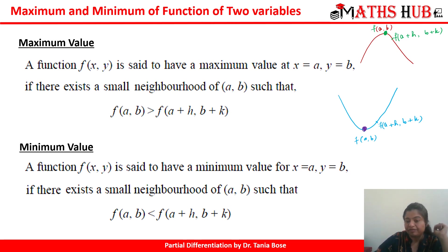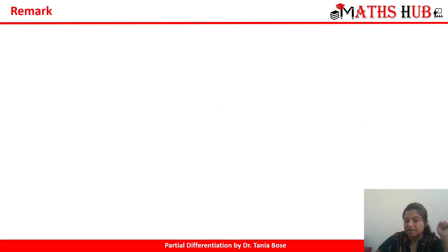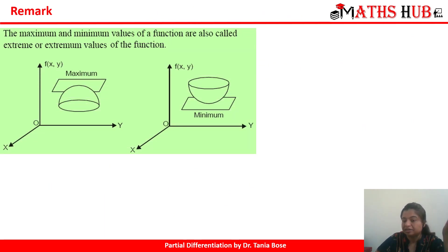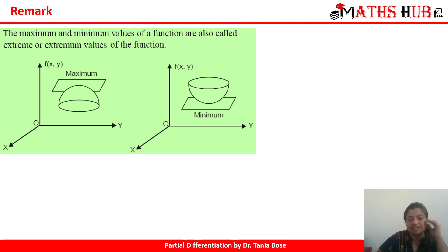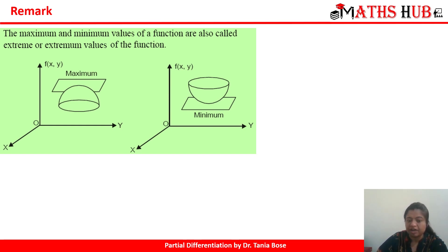With the help of a curve it becomes very easy to see a local maxima or a local minima. But for any given function where we are not able to draw the curve, how do we calculate the maxima and minima? The maximum and minimum values of the function are also known as the extreme or extremum values of the function. So if a question asks to find the extreme values, it means either the function may attain a maximum or a minimum value.